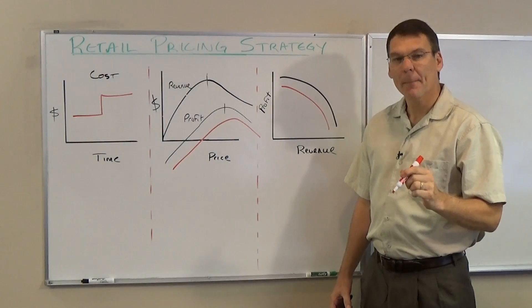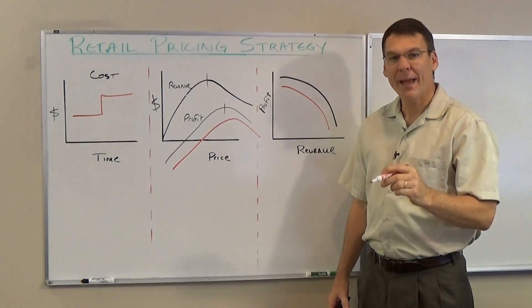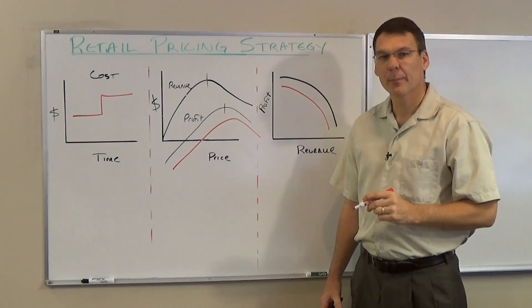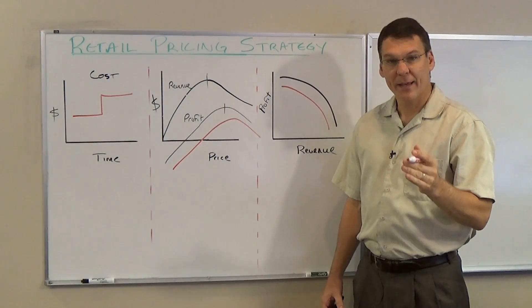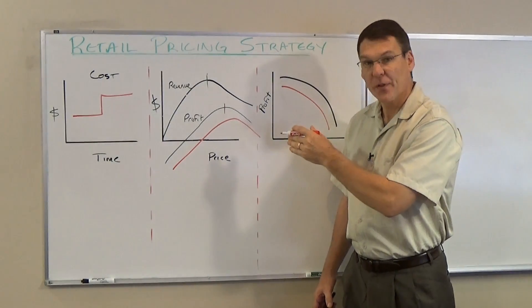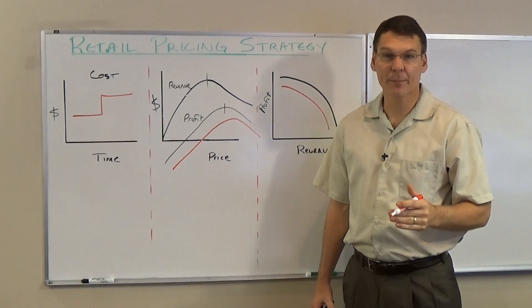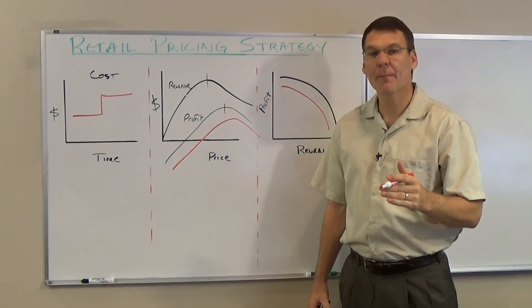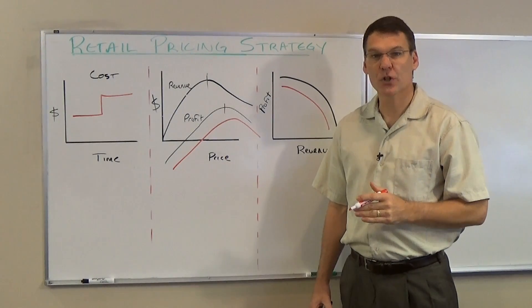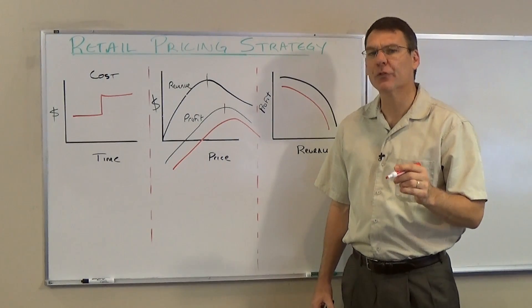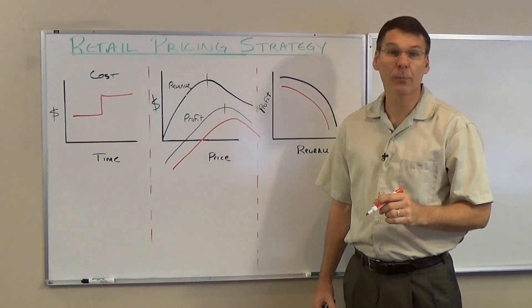A merchant must decide how to make up for this lost profit. They can either increase the price on this item, increase the price on another item, or go back to the vendor and renegotiate. Let's look at how retail science helps them decide.